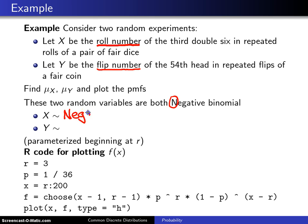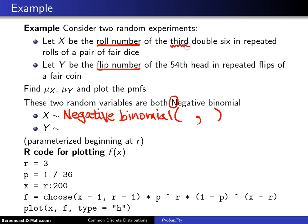For X, we know it's negative binomial, and now we want to figure out its parameters. The parameters in the negative binomial distribution are r and p. In the case of X, we are looking for the third success, where success is defined to be a double six, so r is equal to three, and the probability of rolling a double six when rolling a pair of fair dice is one thirty-sixth.